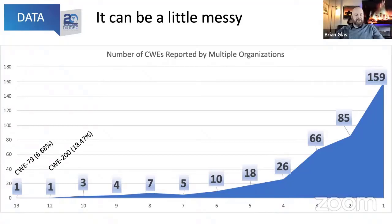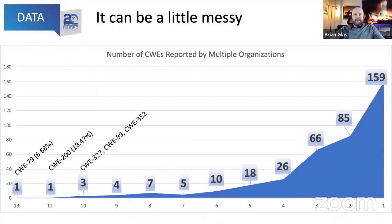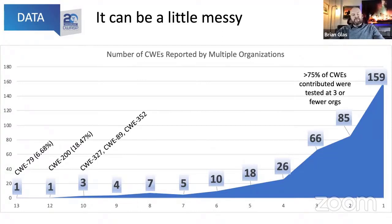Three organizations tested CWE-327 (broken or risky cryptographic algorithm), CWE-89 (SQL injection), and CWE-352 (cross-site request forgery). Then it tails off significantly — greater than 75% of the CWEs contributed in our dataset were tested by three or fewer organizations, which tells us we differ sometimes greatly in how we map types of vulnerabilities to CWEs and how we test for things.